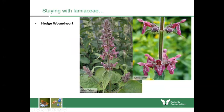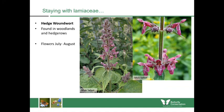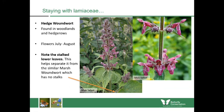Still in the Lamiaceae family, hedge woundwort — as its name suggests — is often found in hedges and woodlands. It grows to about 30 to 40 centimetres tall and has deep purple flowers with often white patterns, almost looking like orchid flowers, though not related to orchids. It has nettle-like leaves but can't sting. It flowers around July or August. Note that the lower leaves have stalks, which separates it from the similar marsh woundwort which has no stalks on the leaves.